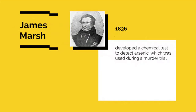In 1836, a Scottish chemist named James Marsh developed a chemical test to detect arsenic, which was used during a murder trial. Nearly a century later, in 1930, scientist Carl Landsteiner won the Nobel Prize for classifying blood into its various groups. Other tests were developed in the mid-1990s to analyze saliva, semen, and other body fluids, as well as to make blood tests more precise.